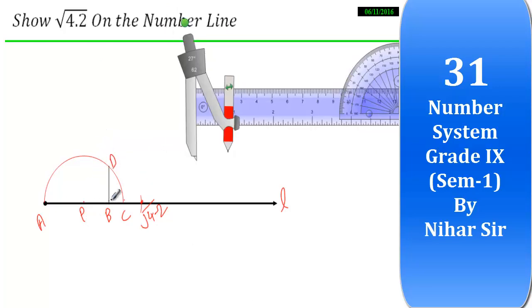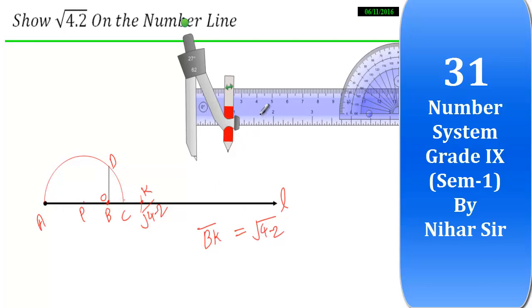So in this, consider this point as 0. This B is considered as 0. Let me name this point K. So my line segment BK is equal to root 4.2, and here 0 is not A, this B is considered as 0.